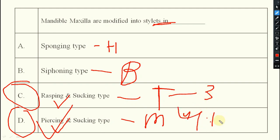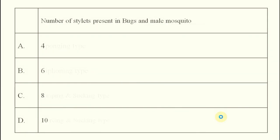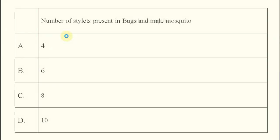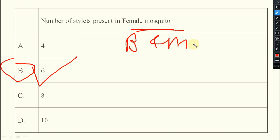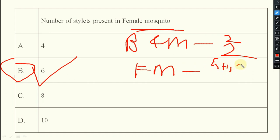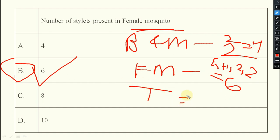In female mosquito, 6 stylets are present. In box and whale mosquito, the answer is 4 — two maxillary stylets and two mandibular stylets. In female mosquito: one epipharynx, one hypopharynx, two mandibular, and two maxillary stylets, making 6 total. In rasping type with 3 stylets, the right mandible is absent, so left mandible (1) plus 2 maxillary equals 3 stylets.